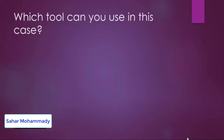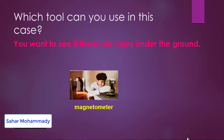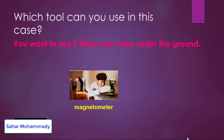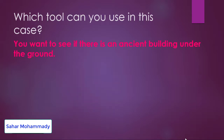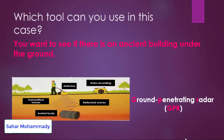Think about which tool to use in each case. If you want to see if there are coins under the ground, you can use a magnetometer because it can detect minerals under the ground. For another case — if you want to see if there is an ancient building under the ground — you can use GPR to record data about buried bodies or objects, analyze the reflected waves, and then start to dig.